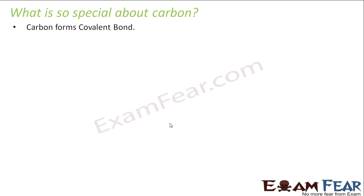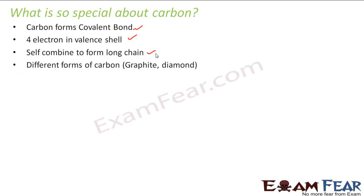Why is carbon so special? Why does it have such a huge number of compounds? One reason is that carbon forms covalent bond. The second is there are 4 electrons in the valence shell and that's one of the reasons why it forms covalent bond. It self-combines to form long chains and there are different forms of carbon called graphite, diamond and Buckminster Fuller.